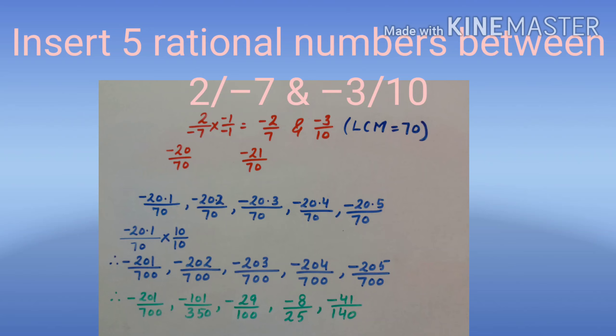Now, we will remove decimals. As one decimal place is there, we will multiply each rational number by 10 upon 10. Answer is minus 201 upon 700, minus 202 upon 700, minus 203 upon 700, and so on. Reduce if you want.